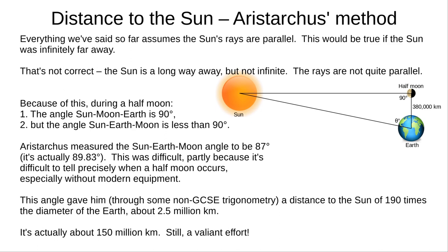Aristarchus's estimate, on the other hand, was 87 degrees. Resulting in a distance of 2.5 million kilometers. That's much less than the true distance of 150 million kilometers. But his method was valid. And this remained the best estimate for several centuries.